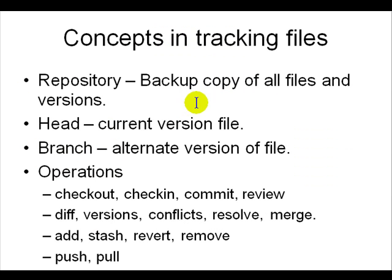So what is tracking files? First thing you need is a repository. You are working with text files on your computer and then you keep a backup in the repository of all the files that are in version control. The repository has a concept of a head — head means the current timestamp of the file, and it keeps all the changes that you made over time.